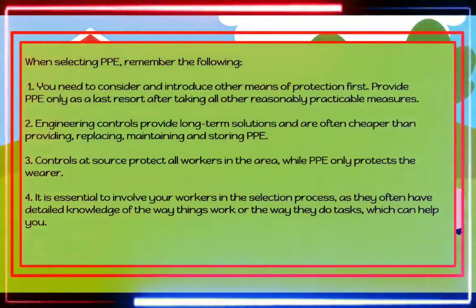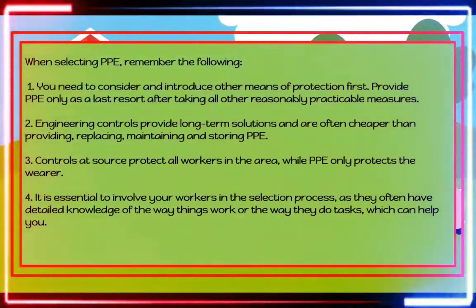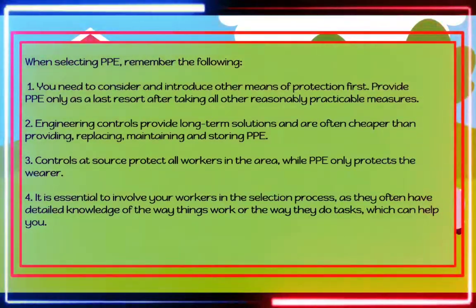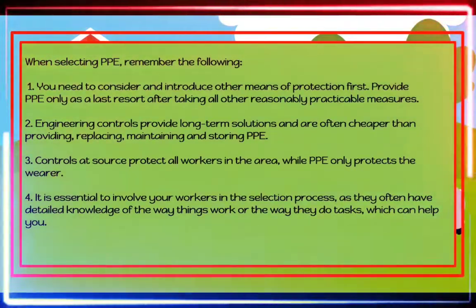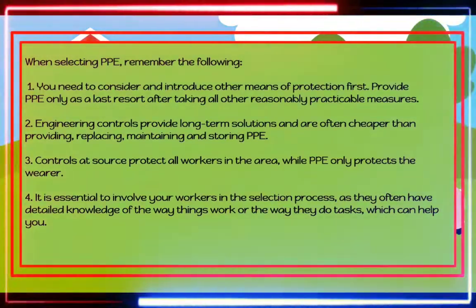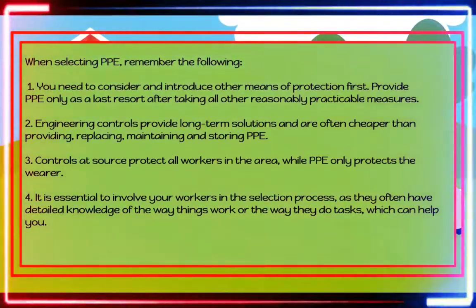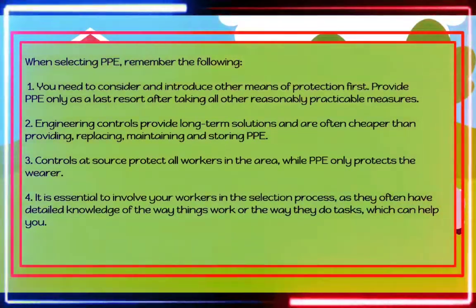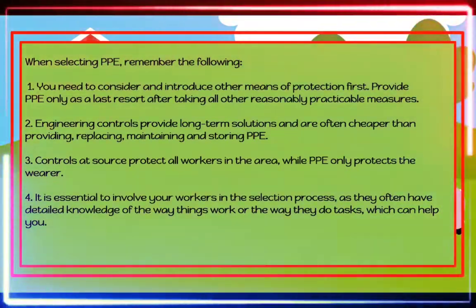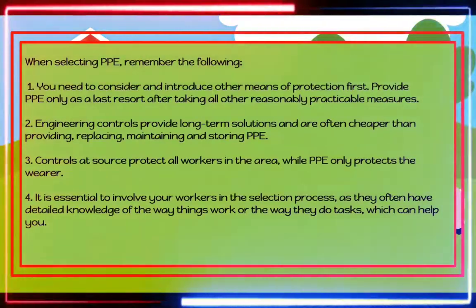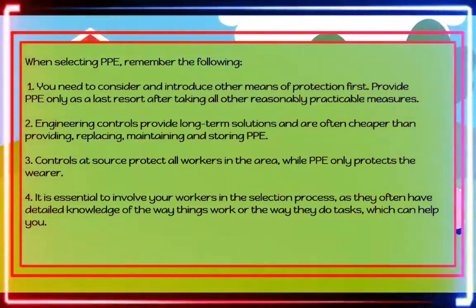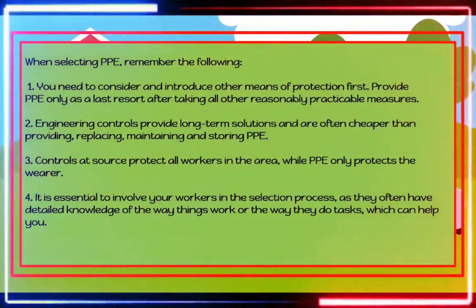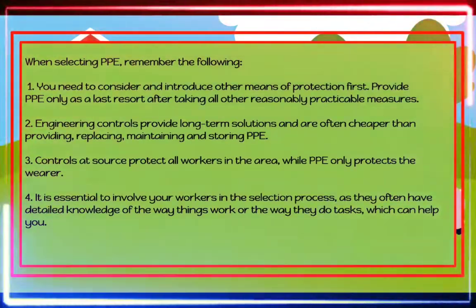When selecting PPE, remember the following. Number one, consider and introduce other means of protection first. Provide PPE only as a last resort after taking all other reasonably practicable measures. Number two, engineering controls provide long-term solutions and are often cheaper than providing, replacing, maintaining, and storing PPE. Number three, controls at source protect all workers in the area while PPE only protects the wearer.